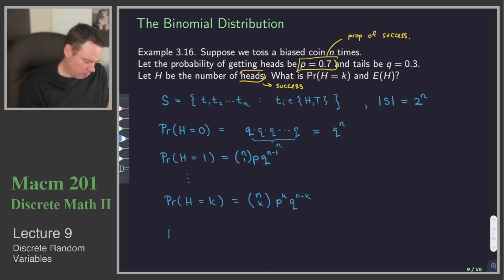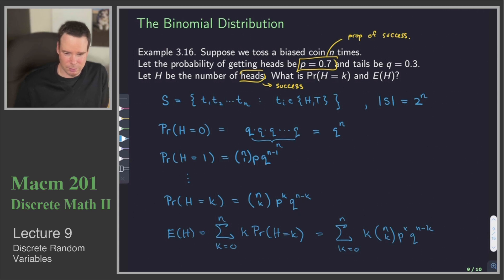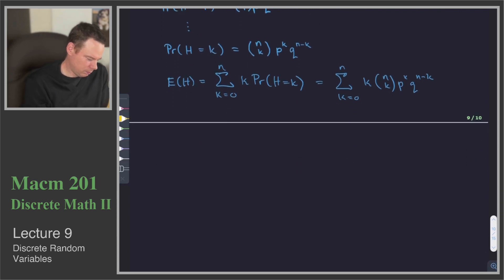Now we can work out the expected value. The expected value for h is the sum over k times the probability that h equals k, as k ranges from 0 to n. That is the sum from k equals 0 to n of k times n choose k times p to the k times q to the n minus k. That almost looks like the sum from the binomial theorem — the only problem is that extra k we have in front.